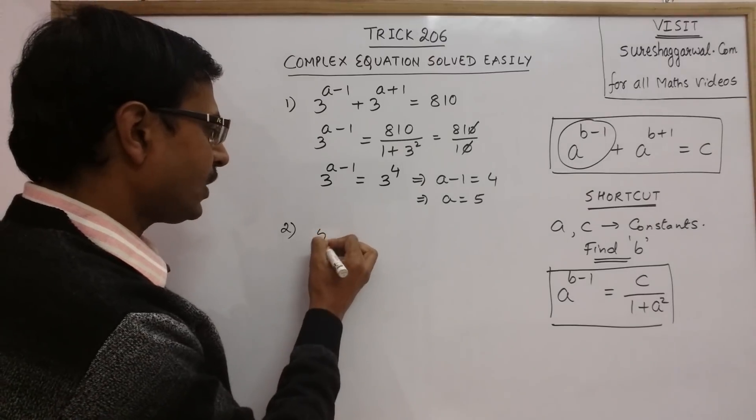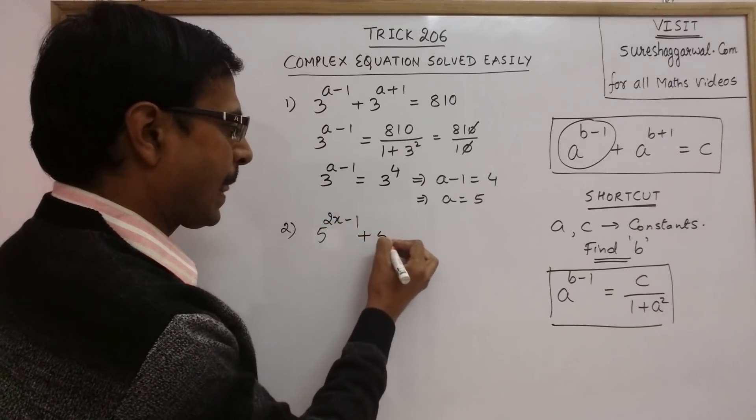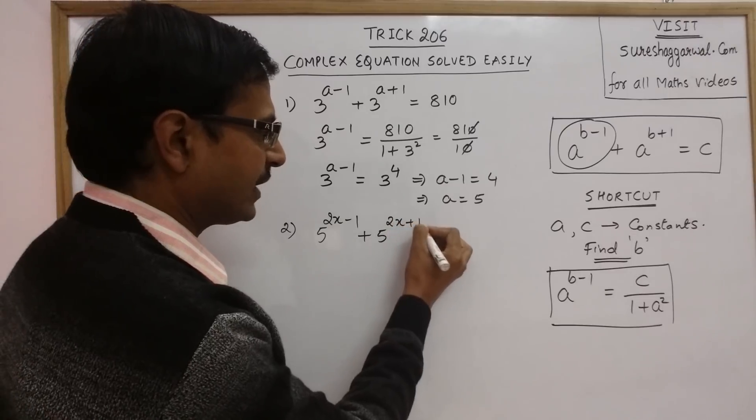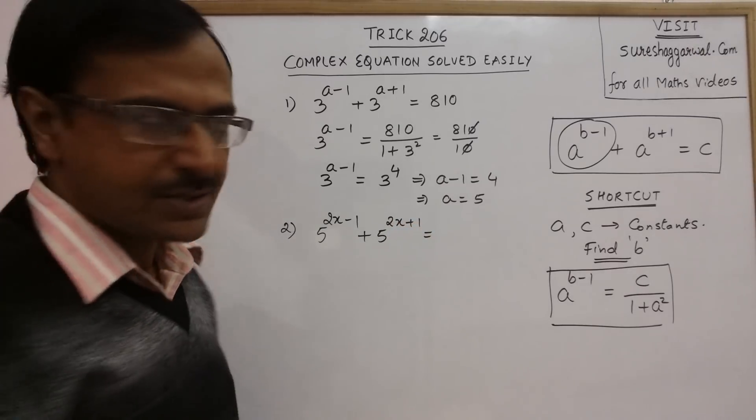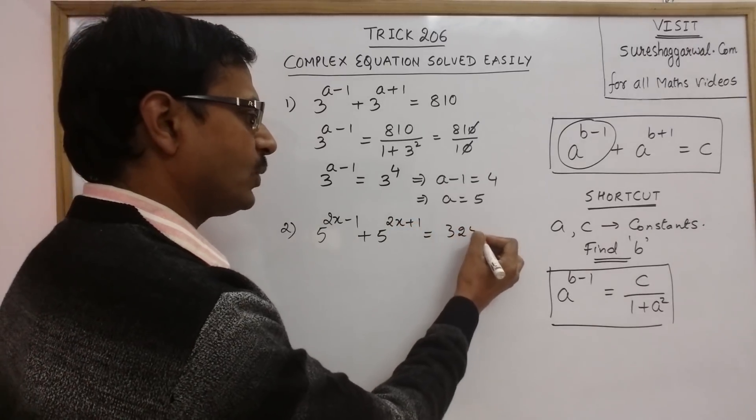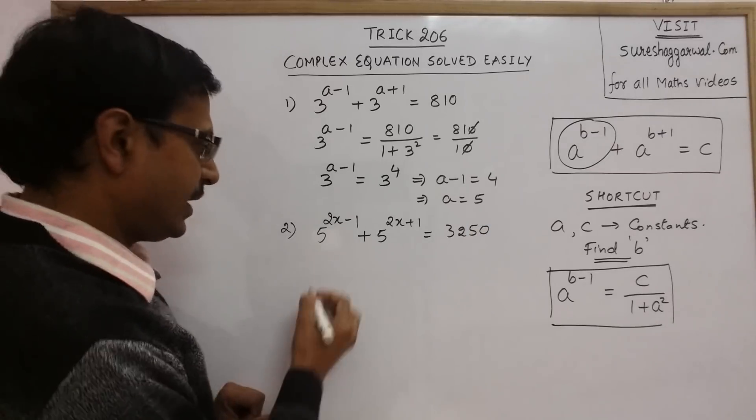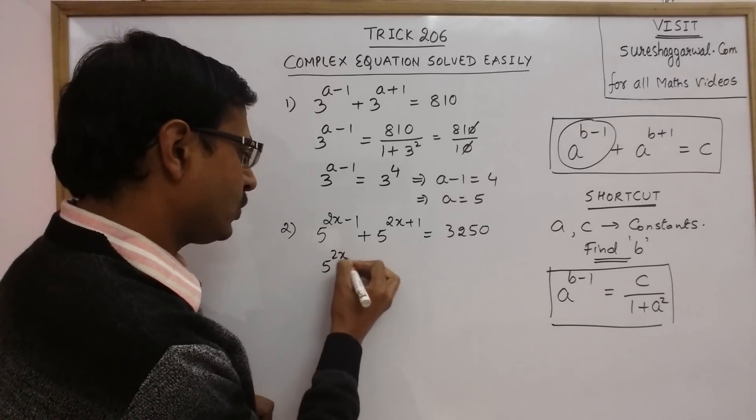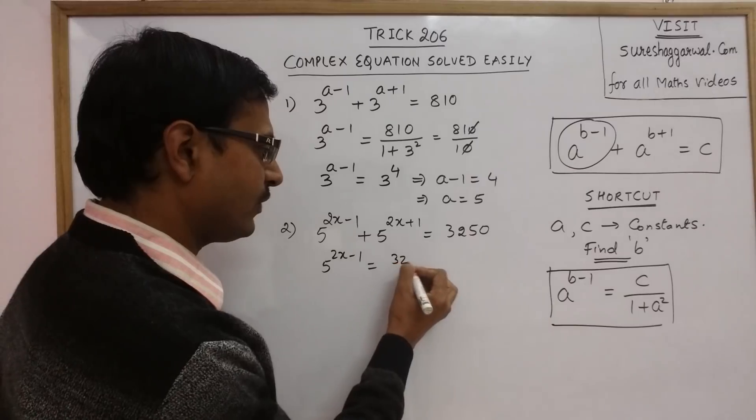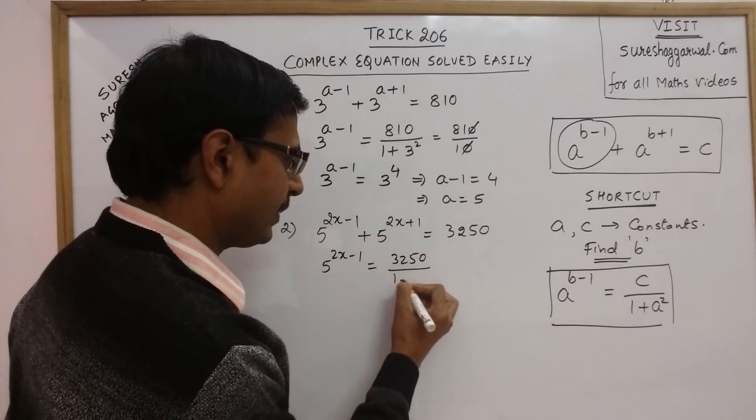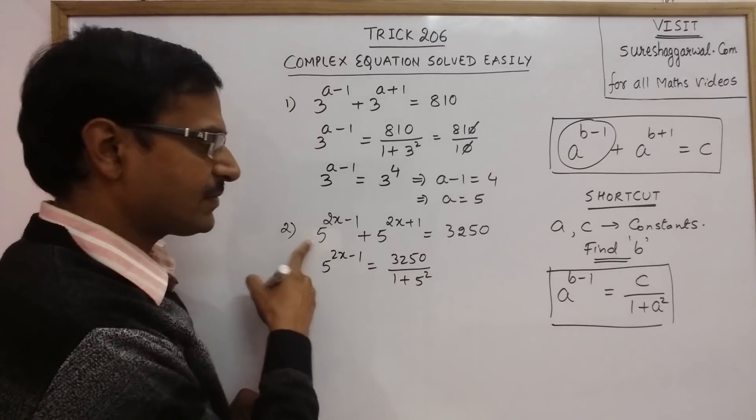Say, we have 5 raise to power 2x minus 1, 5 raise to power 2x plus 1 and in the RHS you have 3250. Now see, I am applying the same shortcut. 5 raise to power 2x minus 1 becomes equal to 3250 upon 1 plus 5 square. Here the base is 5, so 5 square.